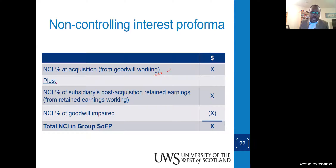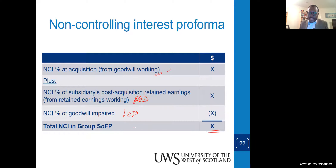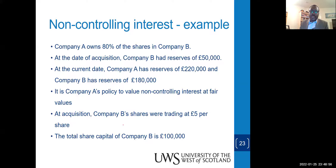We add these elements. If the post-acquisition reserves represent a loss, then we subtract. We then deduct the percentage share of goodwill impairments. The net effect is what we find as the NCI, which transfers into the group's statement of financial position.